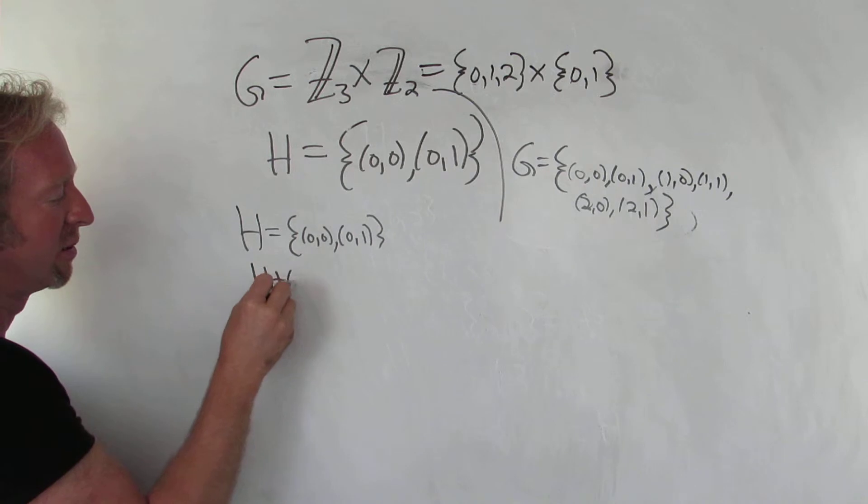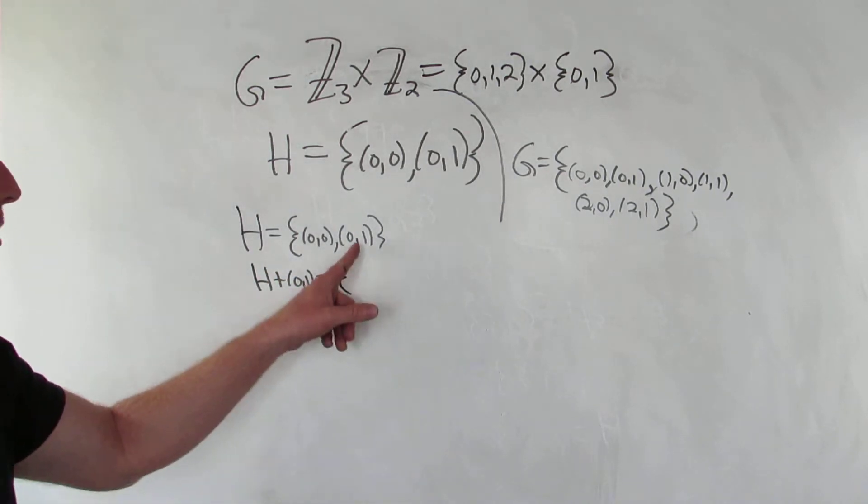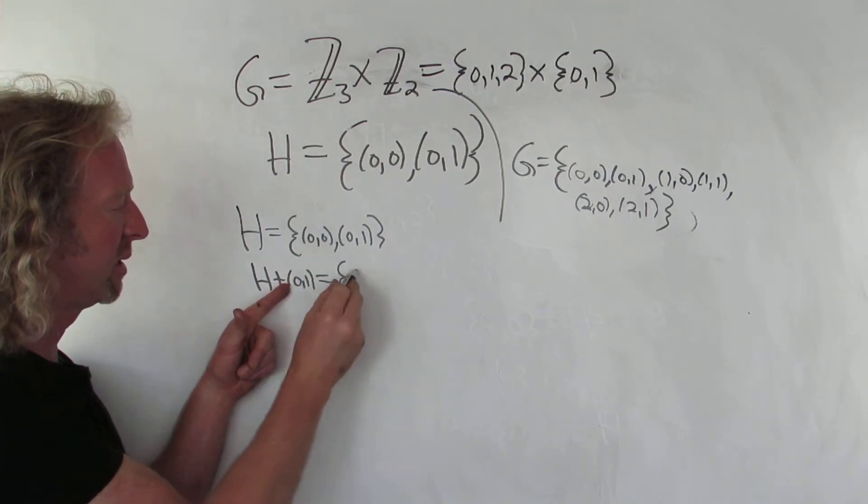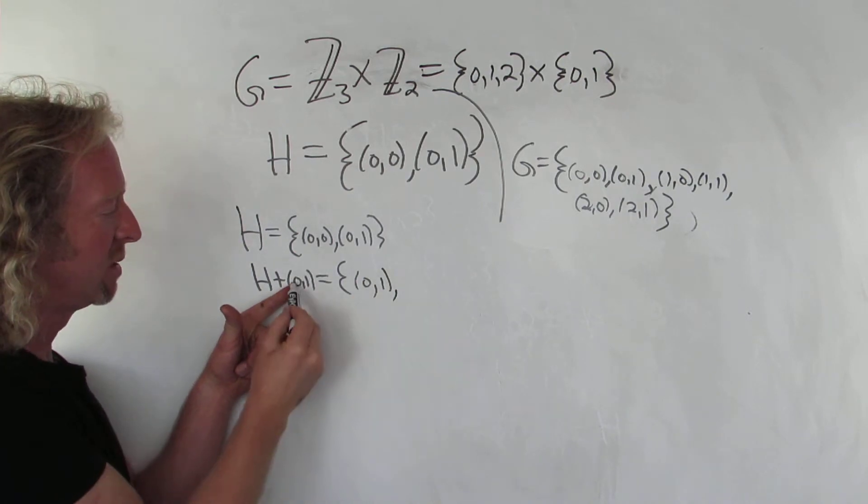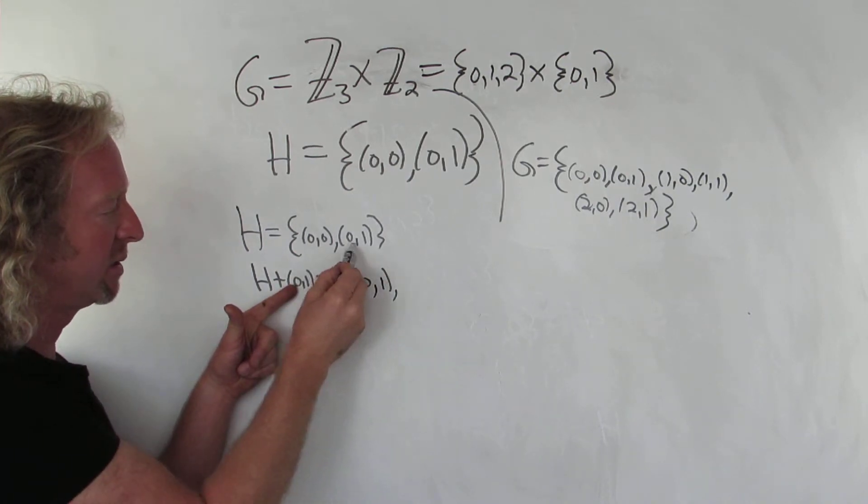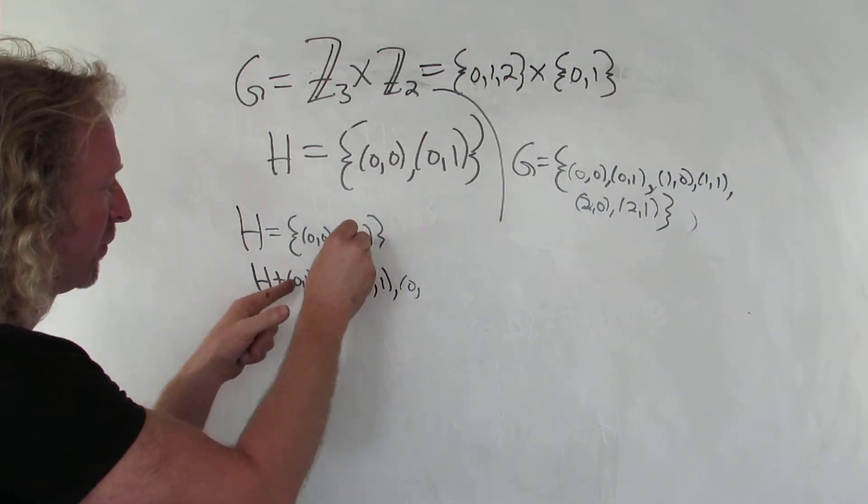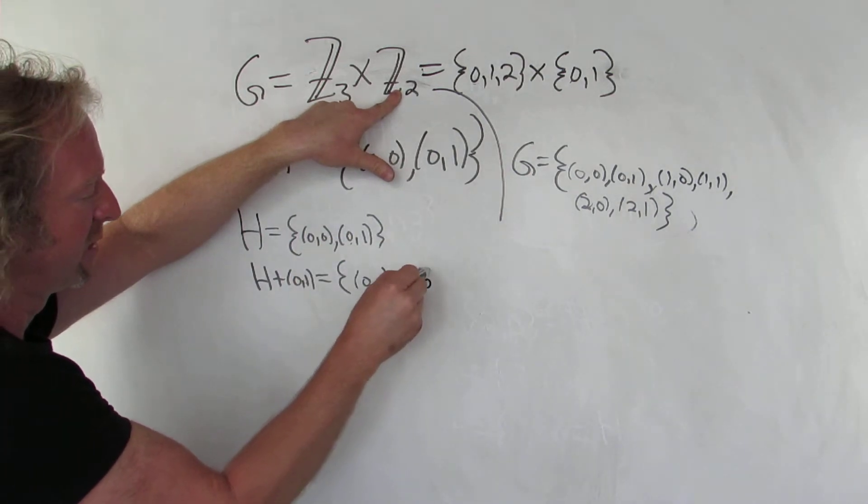Let's look at H plus (0,1). Let me be really careful here. So we're adding (0,1) to each of the elements in H. So 0 plus 0 is 0, 1 plus 0 is 1. 0 plus 0 is 0. 1 plus 1, okay, it's 2. But now this element is in Z2, right? So 2 is equal to 0 in Z2.